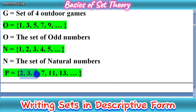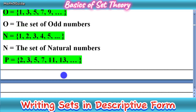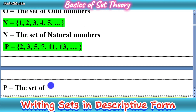The last set is P = {2, 3, 5, 7, 11, 13}. These are prime numbers, because prime numbers have only 2 factors. 2 is the first even prime, then 3, 5, 7 — all are prime numbers. So we write: P = set of prime numbers. This is a simple method to write the given sets in descriptive form.